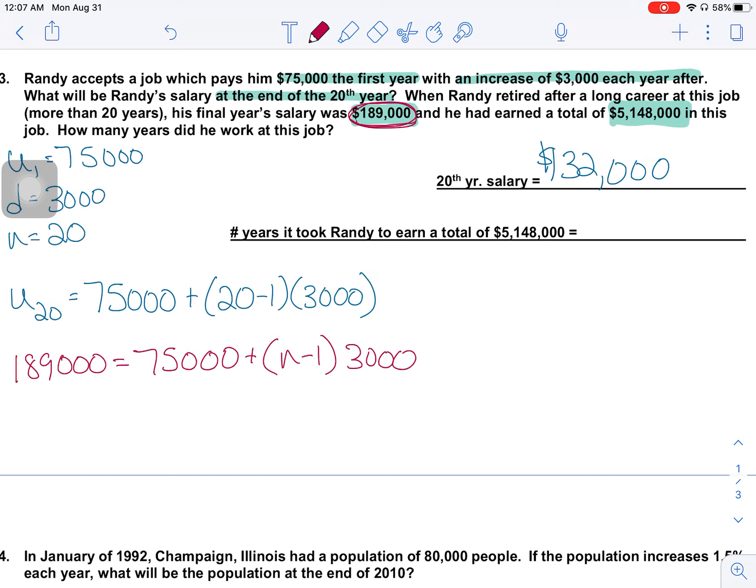So if I solve this, I need to take $189,000 minus $75,000. That's going to get me $114,000 is equal to N minus 1 times $3,000. I'm going to divide both sides by $3,000. And that gets me 38 is equal to N minus 1. So add 1 to both sides. And I now know that he worked for 39 years at that company.